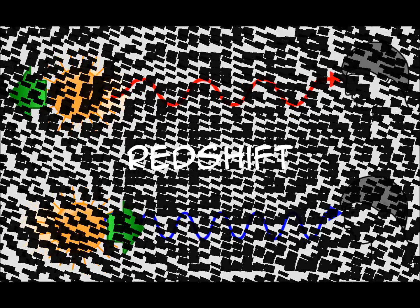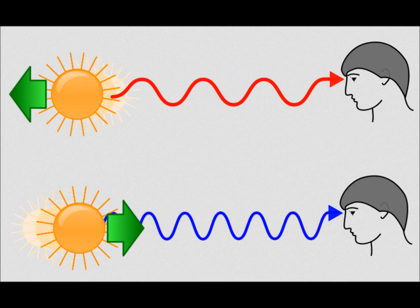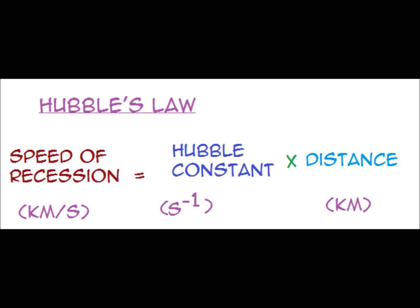Redshift: Distant galaxies are moving away from us. Hubble compared the speed and distances for many different galaxies and found the more distant the galaxy, the faster it moves away from us. He did this by calculating how much the wavelength of light had been redshifted. This all suggests the universe is expanding from a single point. Hubble's Law: speed of recession equals Hubble constant times distance.